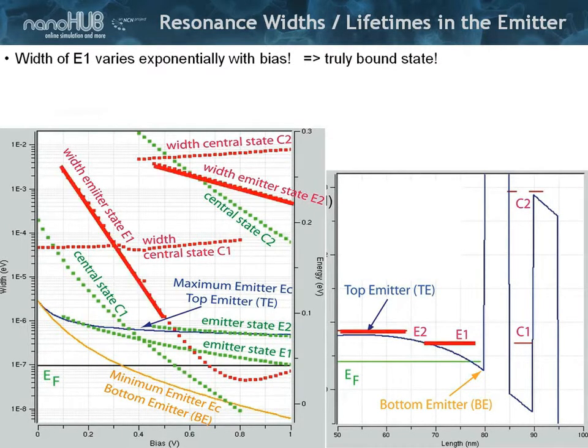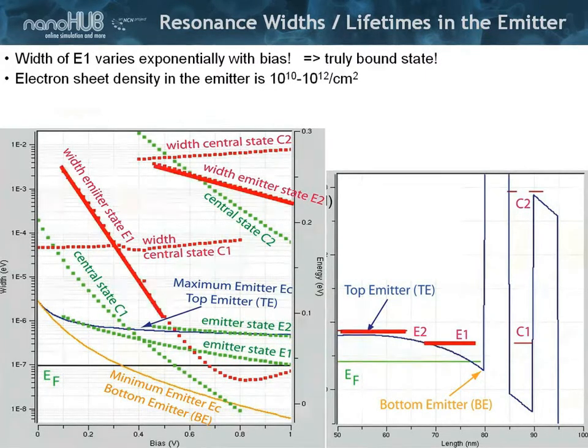It gets smaller than the central resonance state. We've also seen that this emitter state E2 is remaining pretty broad. This emitter state E2 roughly stays hovering above the barrier. It's like an above-the-barrier resonance. In this particular RTD, the state E1 is being pulled into the confinement region. So far so good. But what that really means is you have found a truly bound state.